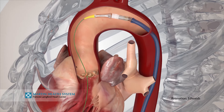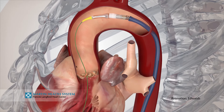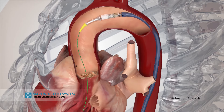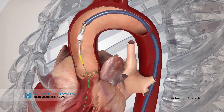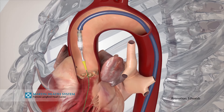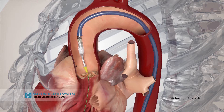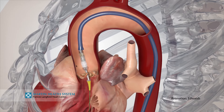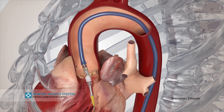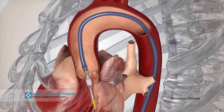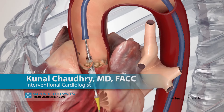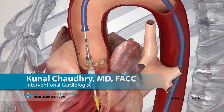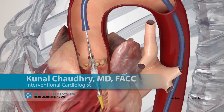You dilate the valve with a balloon and then you place the valve, which is mounted on a stent, through that sick valve and expand the stent. This delivery catheter allows us to put the stent valve directly on top of your old valve.